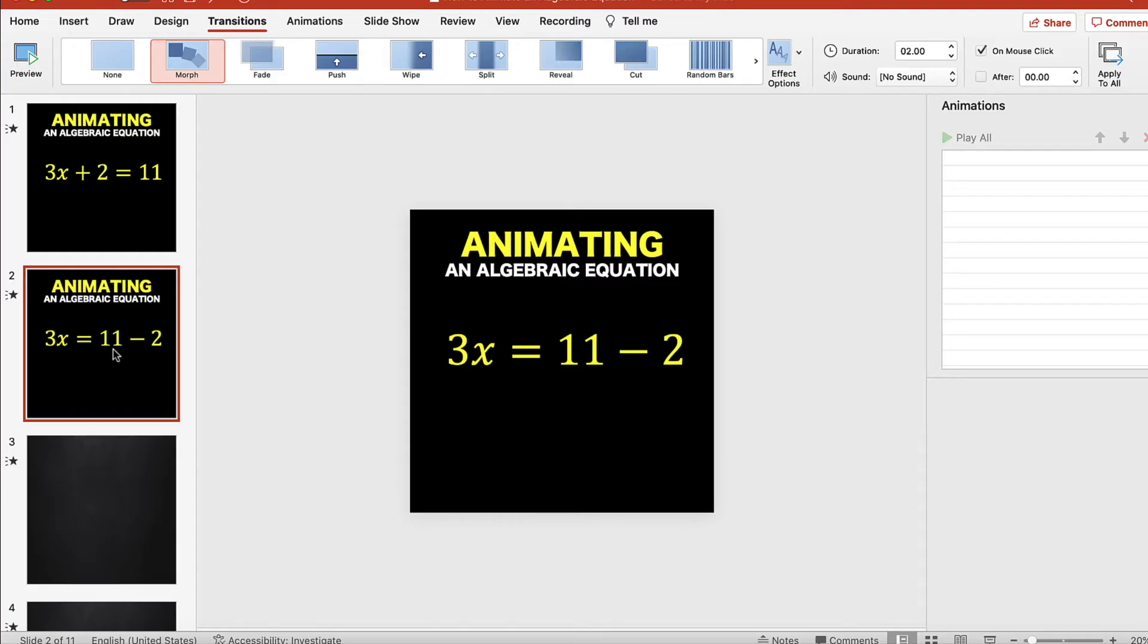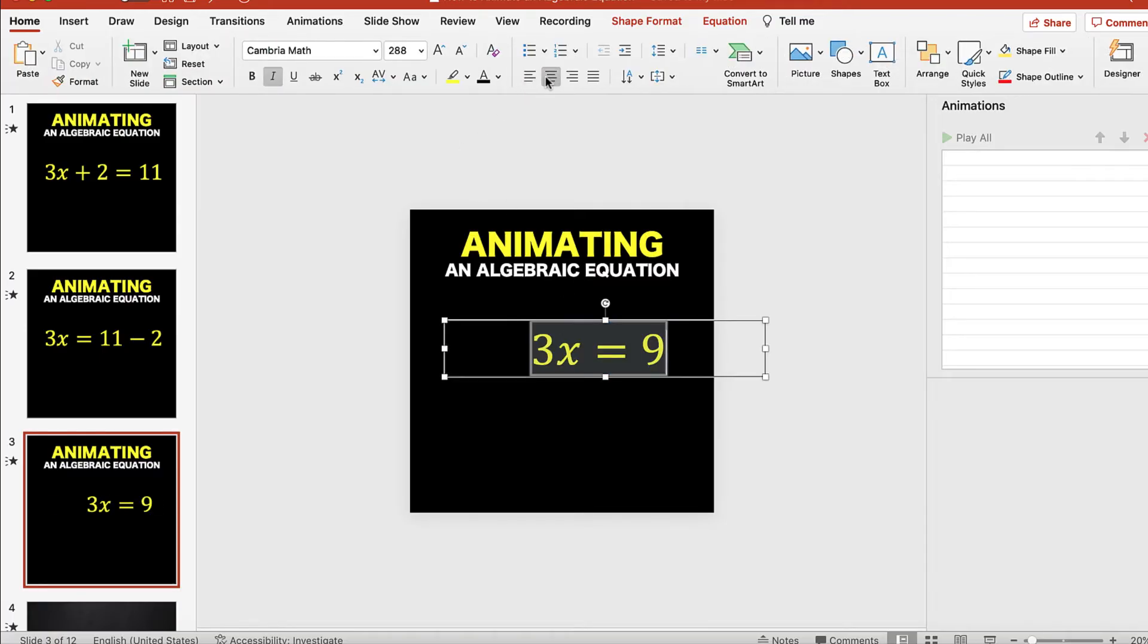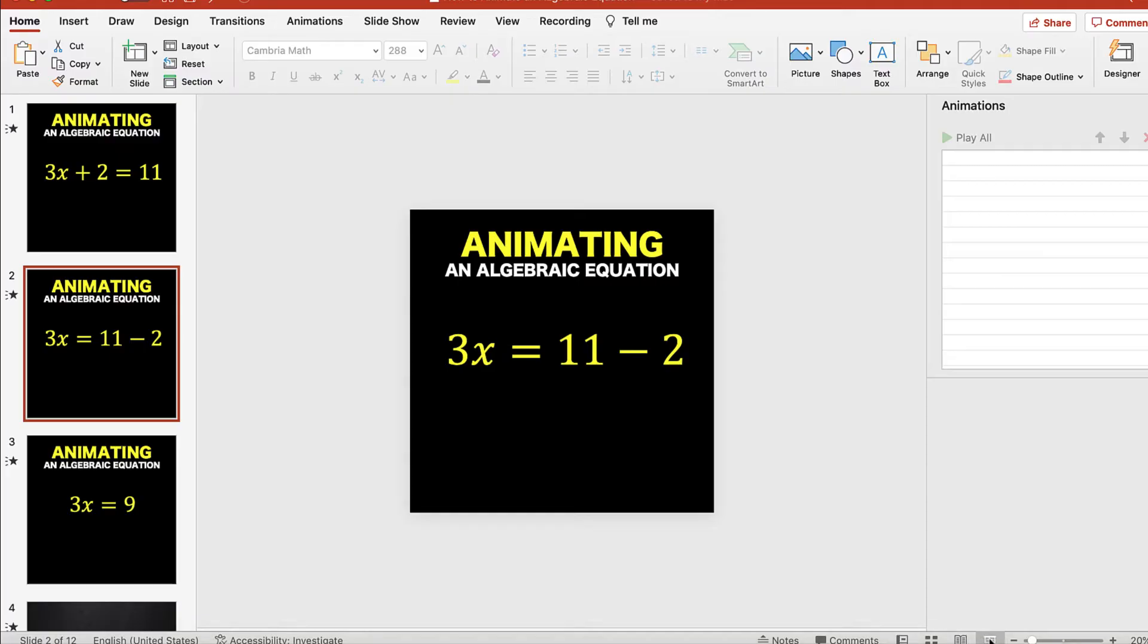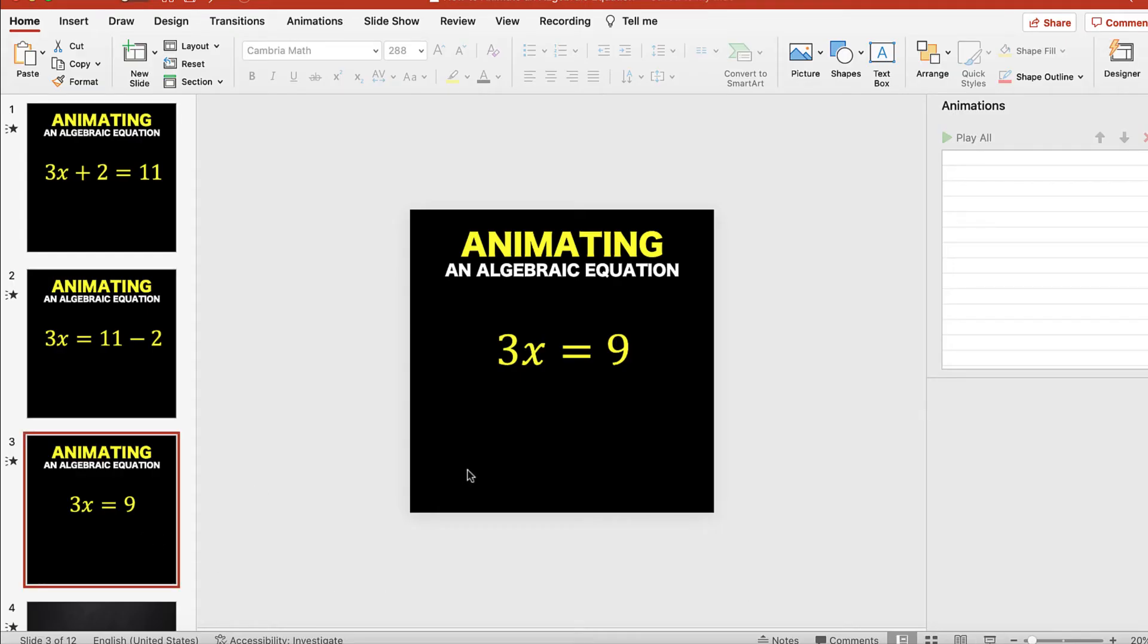I continue doing the same thing. I duplicate this with Command Shift D. I replace this 11 minus 2 with 9, make it centered around here. When you run now the second slide going to the third slide, notice now that there is this animation.